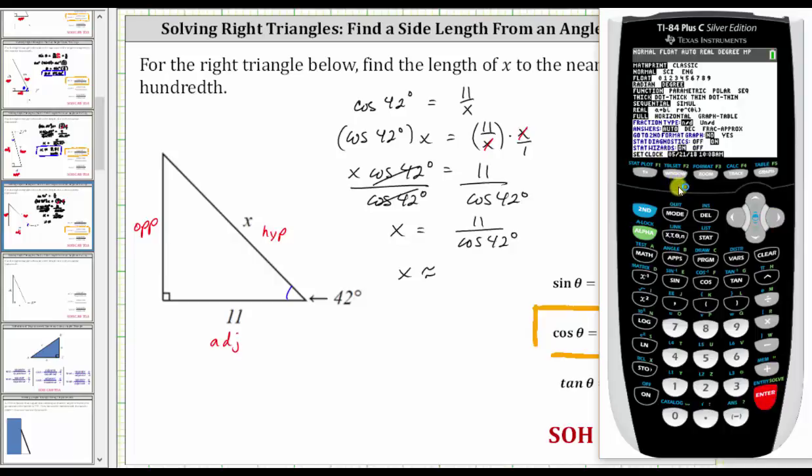Go back to the home screen, we press second mode for quit, and now we enter eleven divided by cosine 42, close parenthesis, and enter.